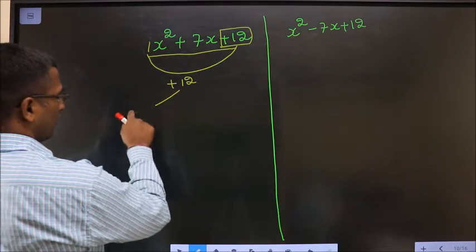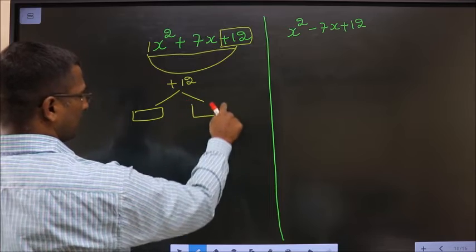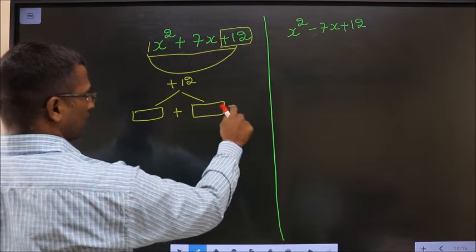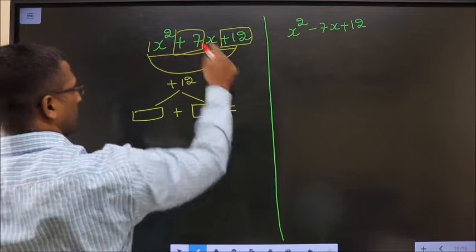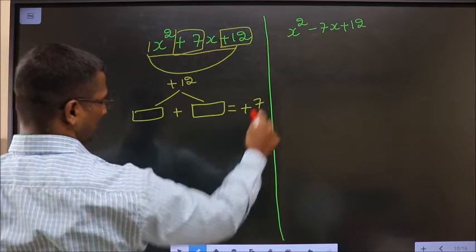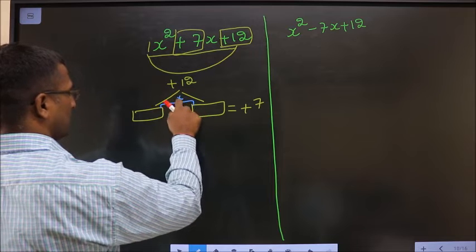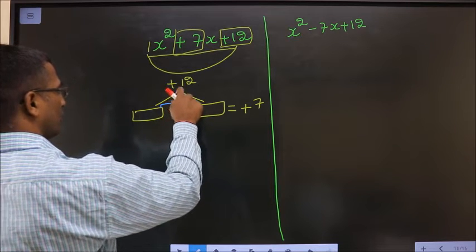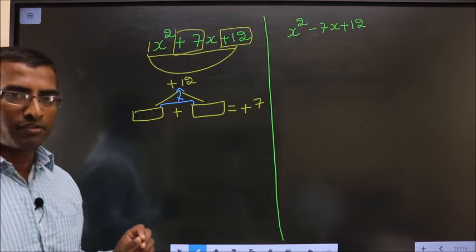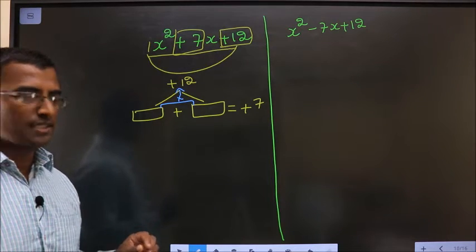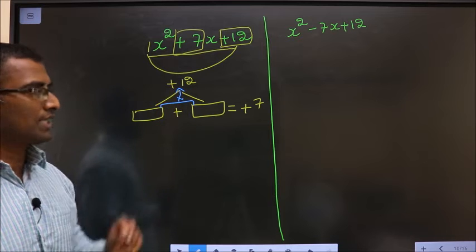Now you should look out for two numbers such that when you add them you should get the middle number, which is 7, and also when you multiply these two you should get plus 12. So look out for two numbers such that when you add you get plus 7 and when you multiply you get 12.